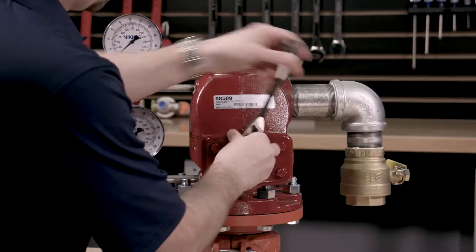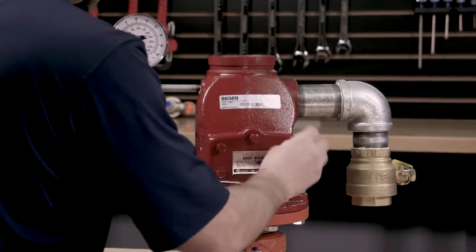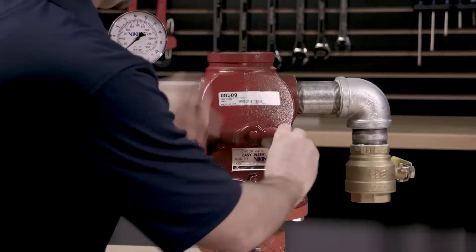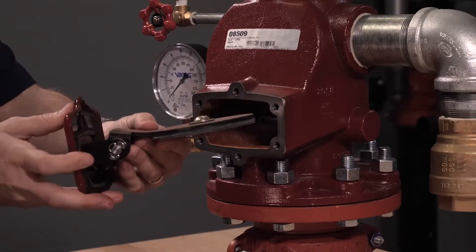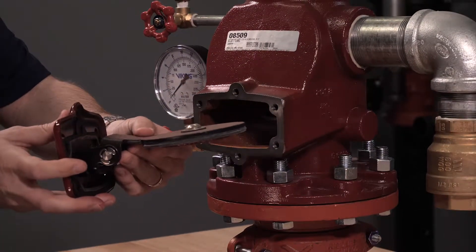To replace the clapper assembly we will first need to remove the cover screws from the cover of the valve. The clapper assembly is connected to the cover of the valve and the components will be removed simultaneously.